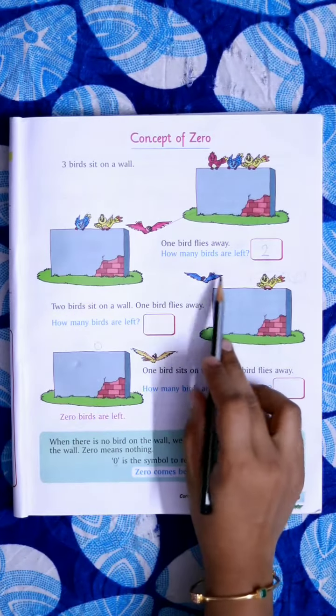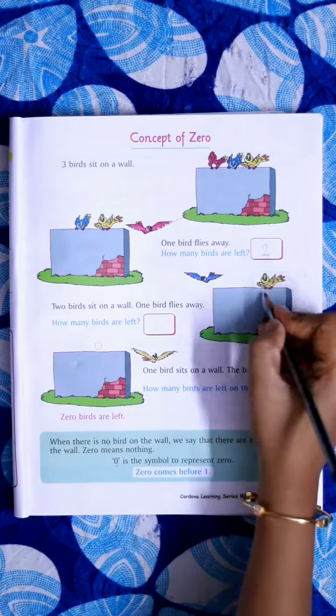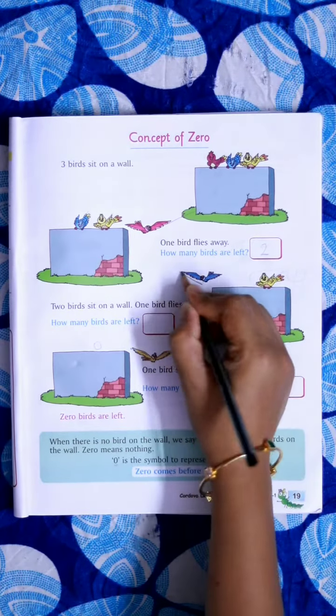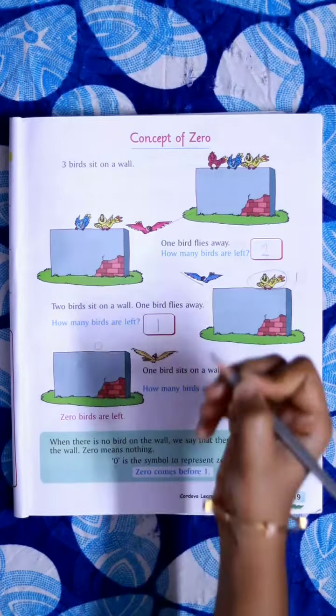Two birds sit on a wall and one bird flew away. So how many bird left? So we have to write one here.